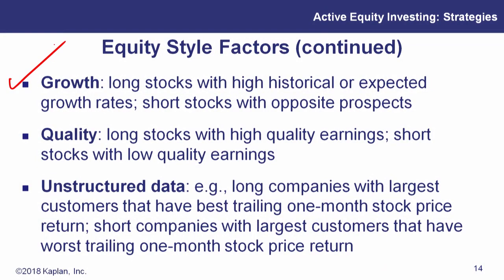So let's go a little bit more into these style factors. How about growth? How about quality? Or let's get into some unconstructed data. Let's look at stocks that had the best trailing one-month stock price return. Maybe short companies with the worst trailing one-month stock return. Maybe we want to trade on five-minute intervals. There are a lot of ways to attack these styles, focusing on the factors that we want to add to the portfolio or subtract from the portfolio.